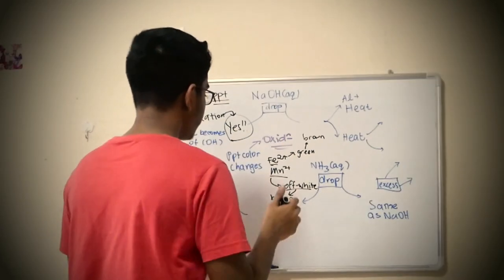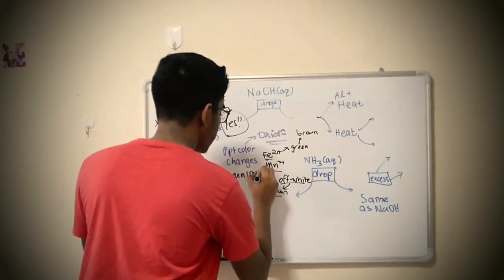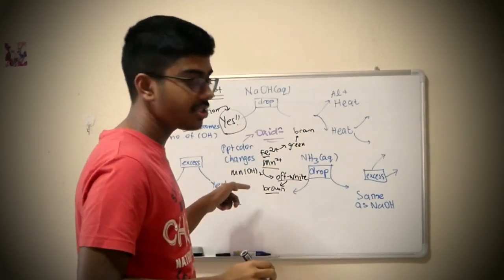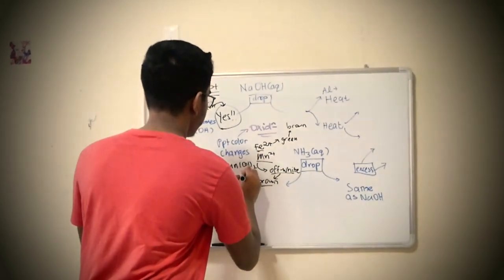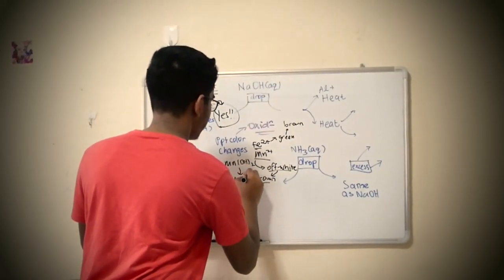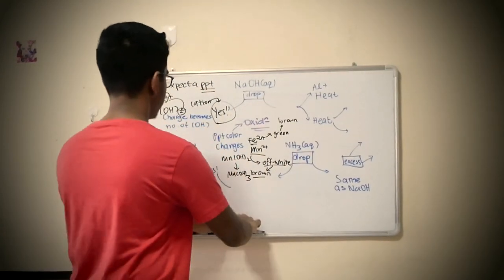And what is the thing that's formed? Basically you have Mn(OH)2, because it's a 2 plus charge, it oxidizes, it becomes 3 plus. So it becomes Mn(OH)3. Simple enough. So how do you recall the concept?